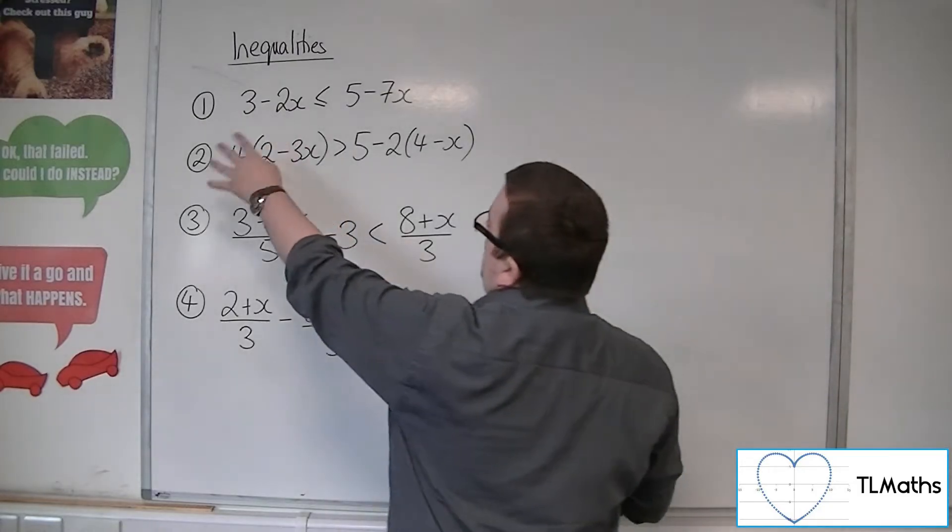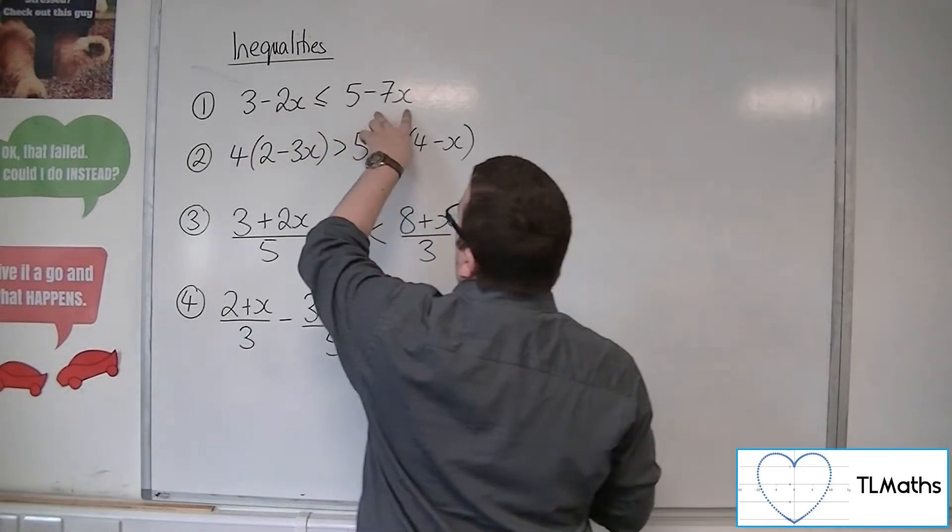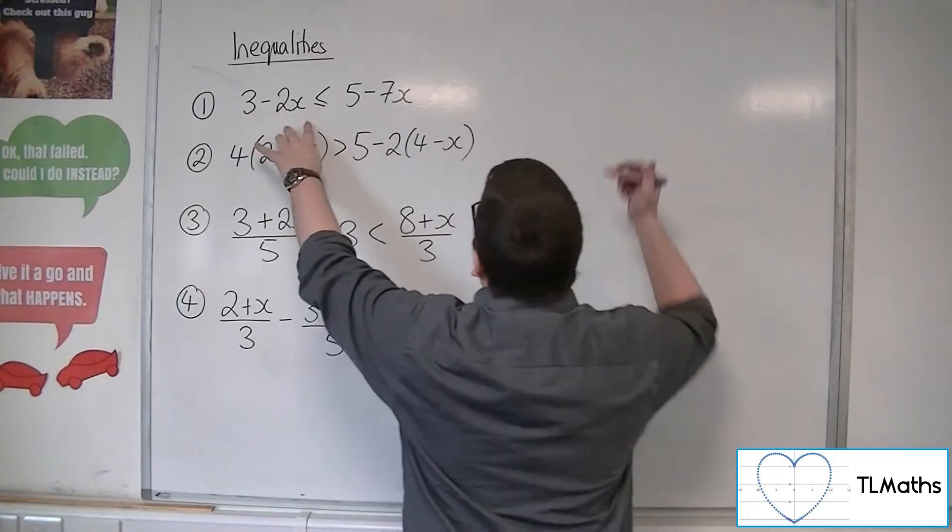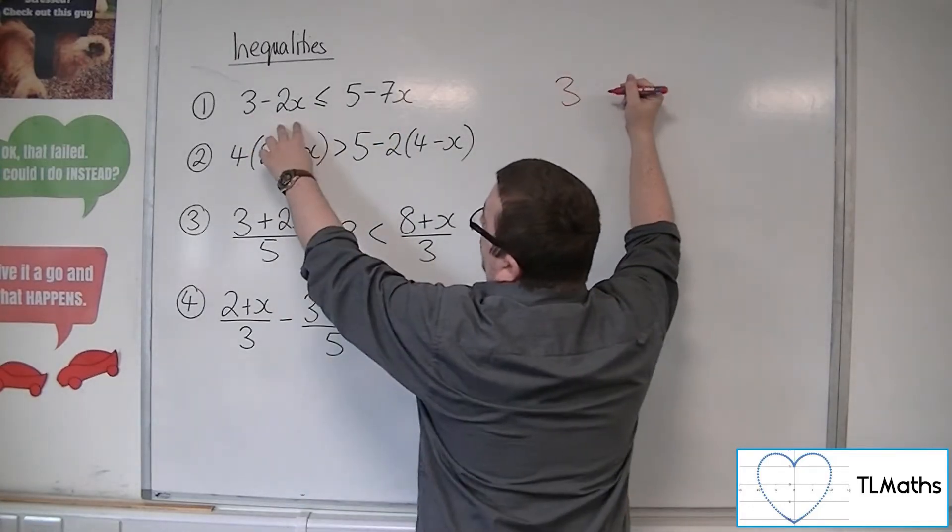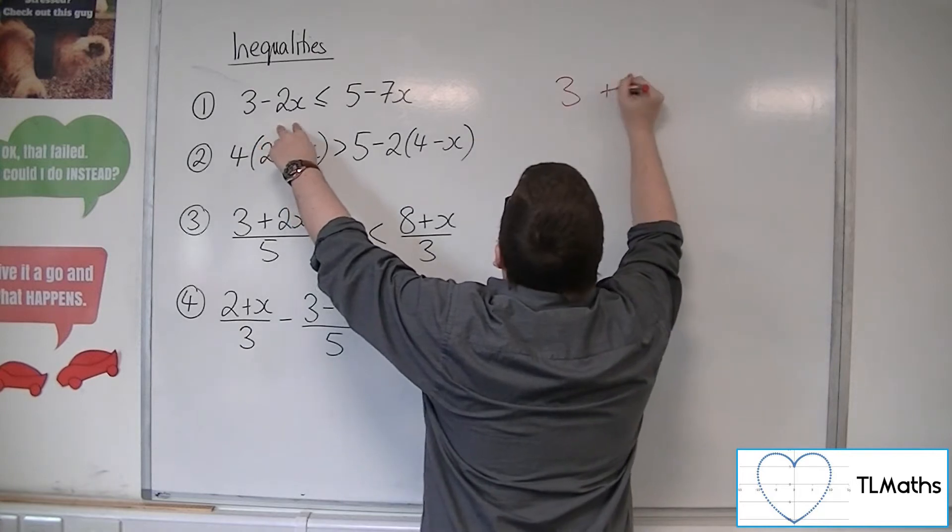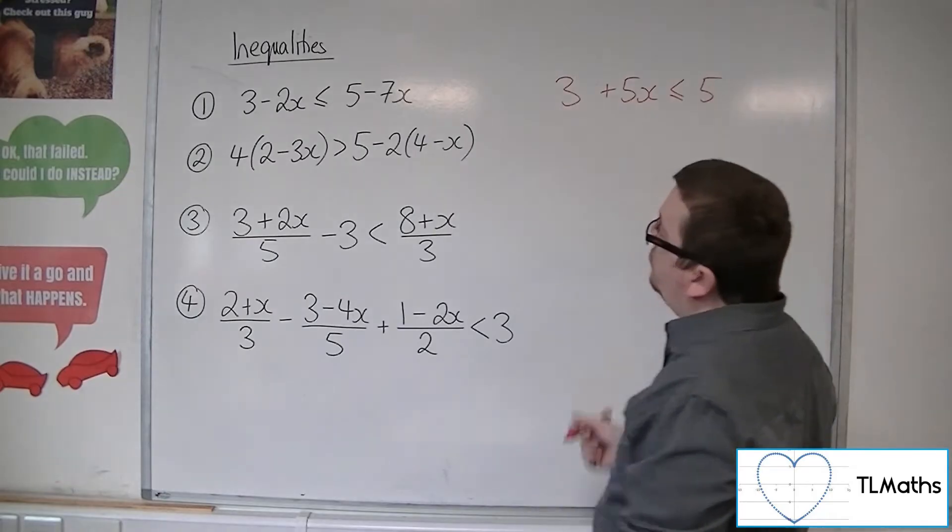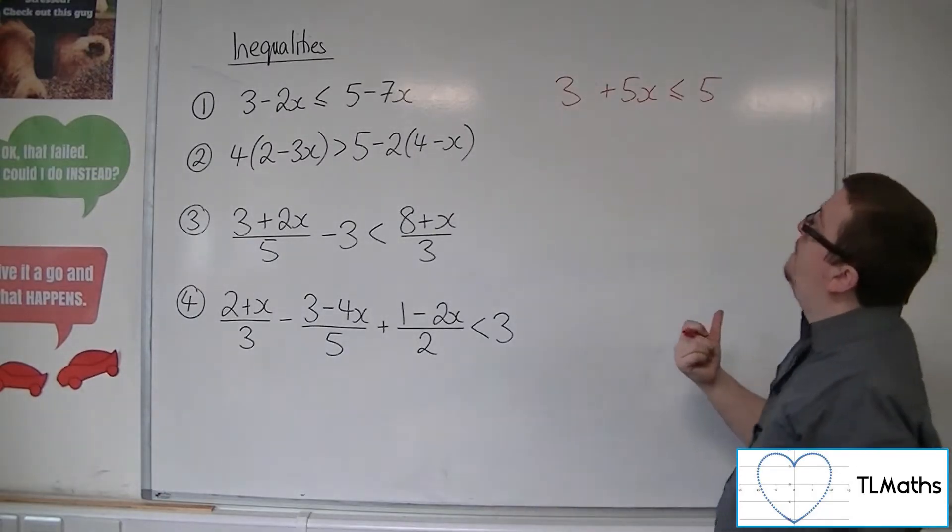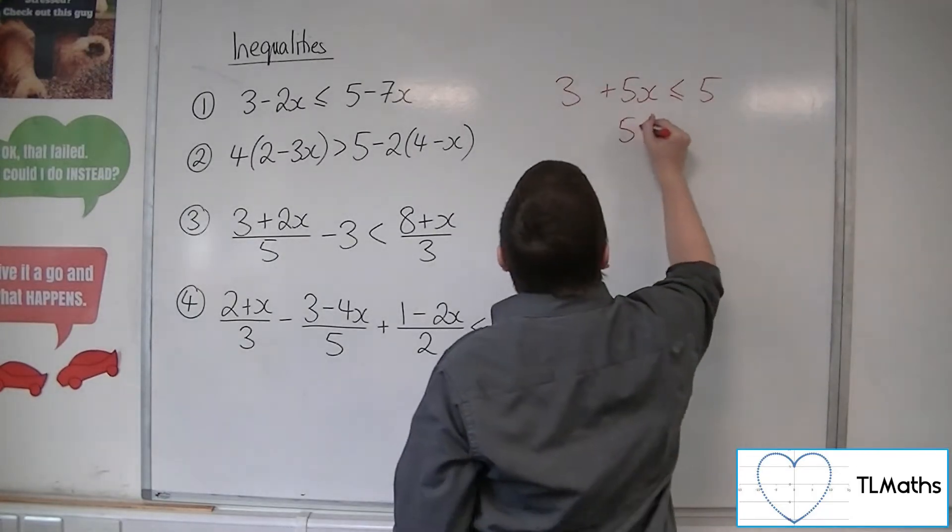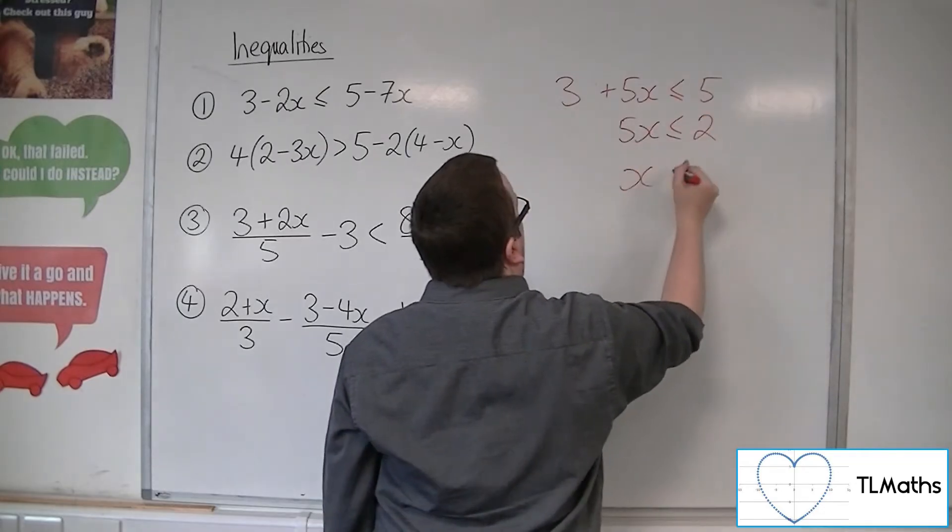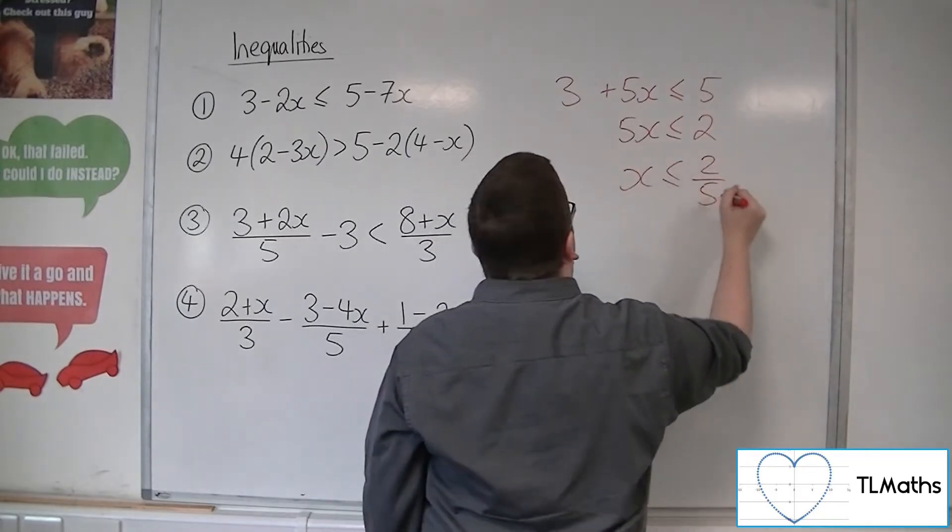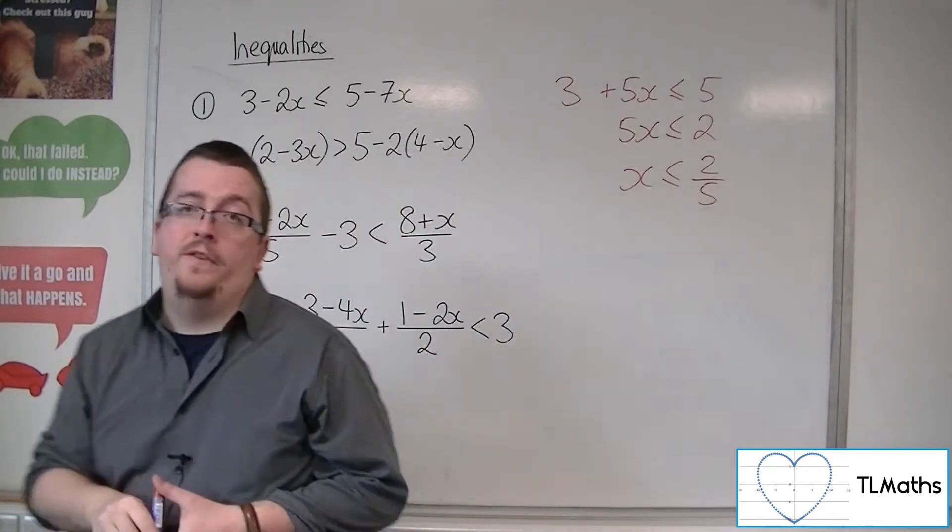It makes sense to make it positive for ourselves. I'm going to add 7x to both sides. So we're going to have 3 and then minus 2x plus 7x is plus 5x. That's going to be less than or equal to 5 still. Subtract the 3 from both sides and then divide both sides by 5. So x is less than or equal to 2 fifths.